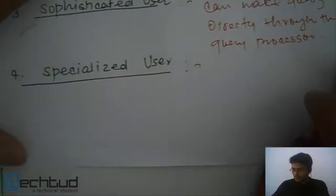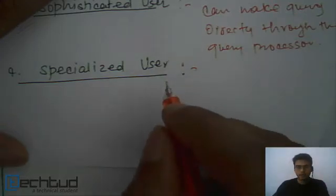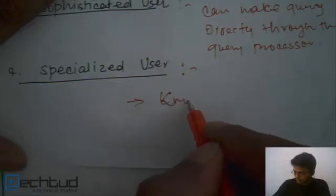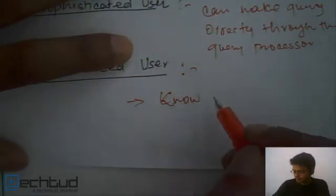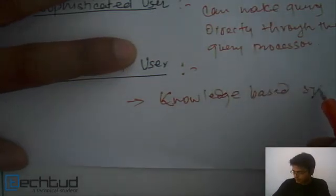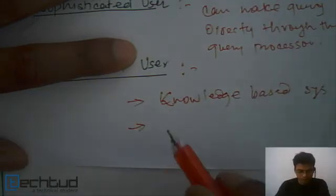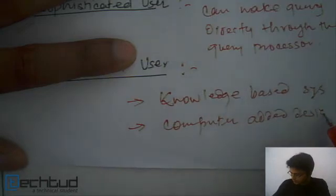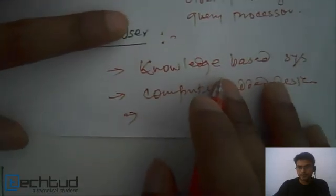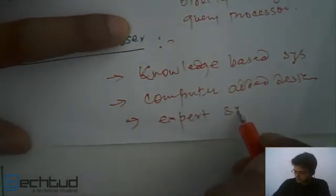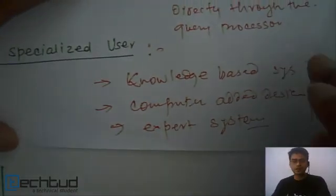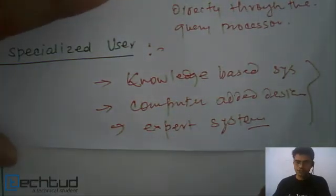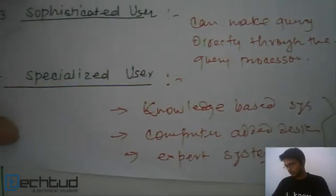The next one is the specialized user. These kind of users are specialized in database techniques. They write programs which don't fit into our traditional framework. Programs like knowledge-based systems which you might have learned in AI artificial intelligence, or computer aided design, or expert systems. These kind of users are working with special types of database applications which generally don't fit to our traditional framework or to the framework we are studying in this course.